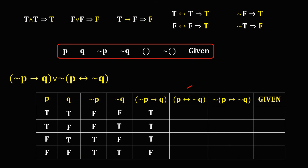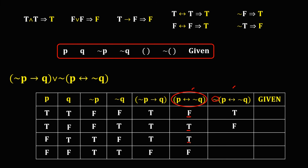For this column, the connector is biconditional — the double arrow. If the same, the truth value is true. From P and NOT Q: true and false — not the same — is false; true and true — same — is true; false and false — same — is true; false and true — not the same — is false. Then the negation of this column: not false is true, not true is false, not true is false, and not false is true.